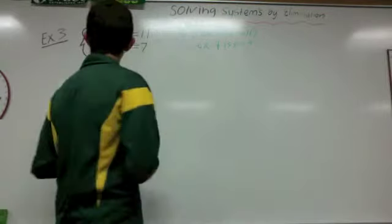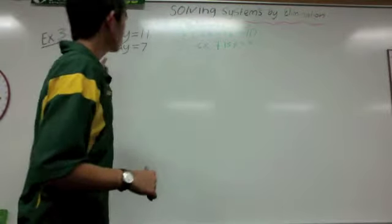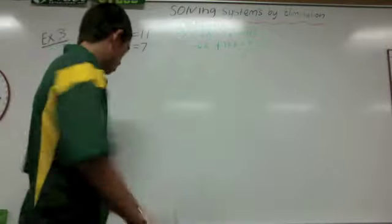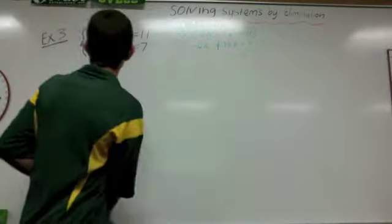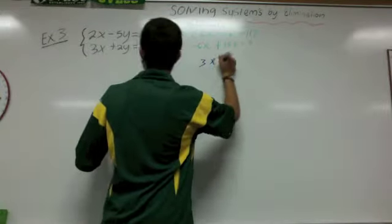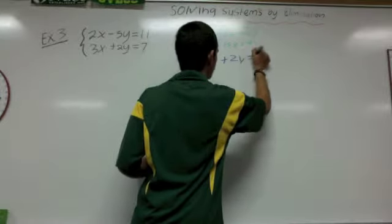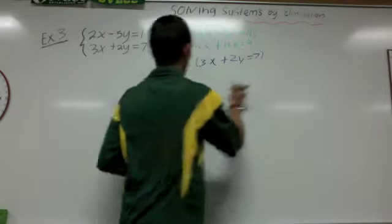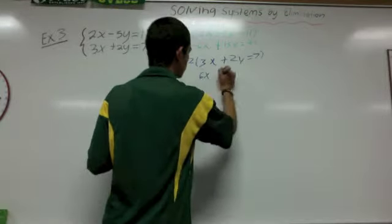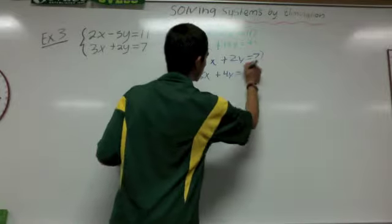Now we're going to multiply the second equation by 2 so we are able to cancel out the x's and then find the y variables. So we're going to do 3x plus 2y equals 7, multiplied by 2, giving us 6x plus 4y equals 14.